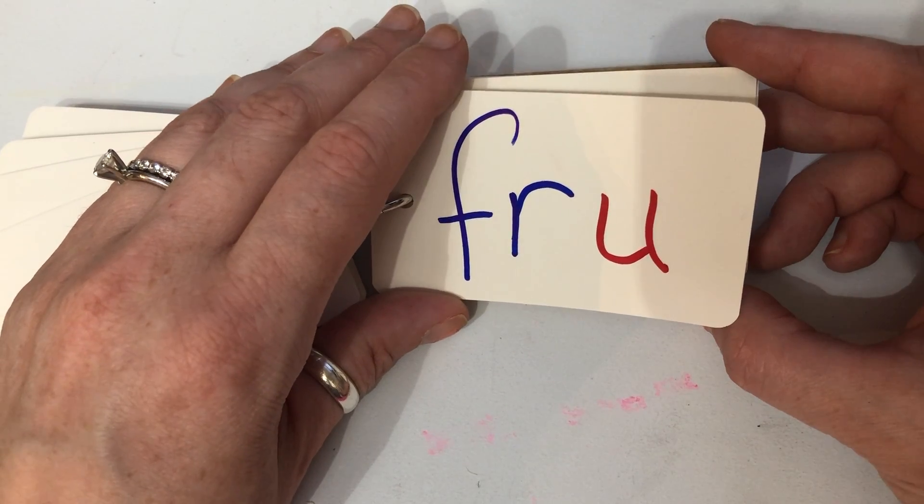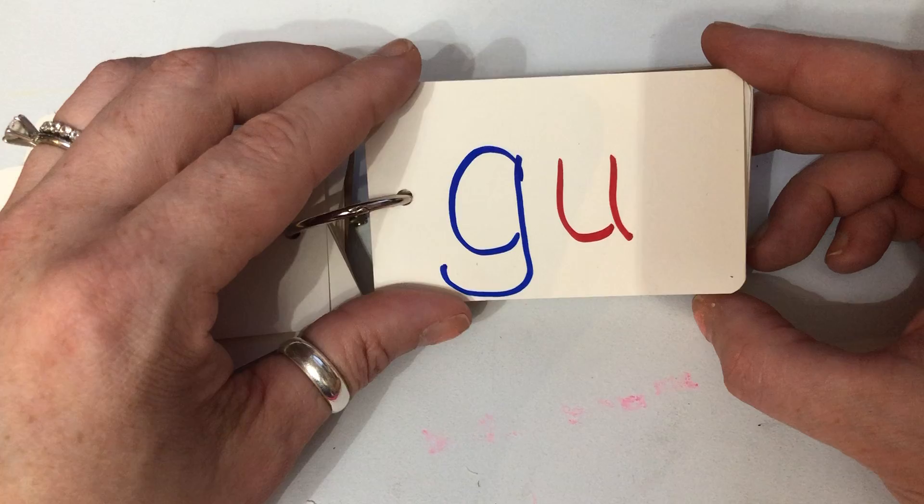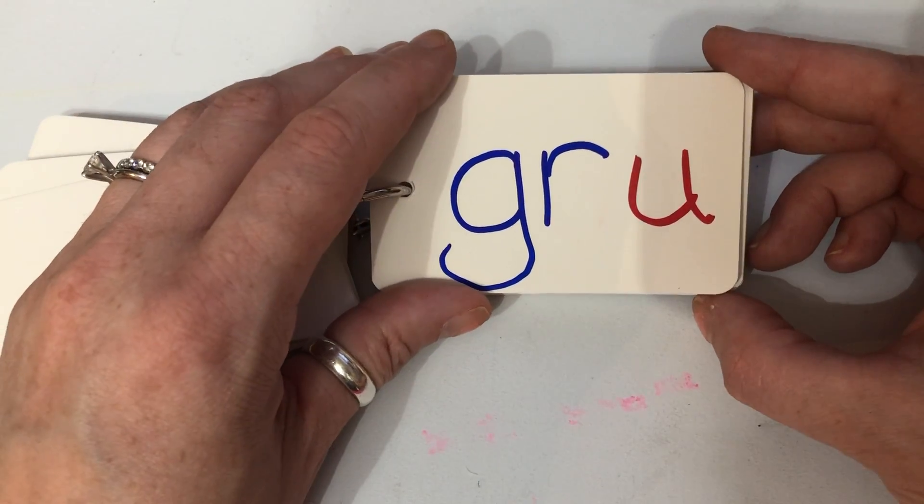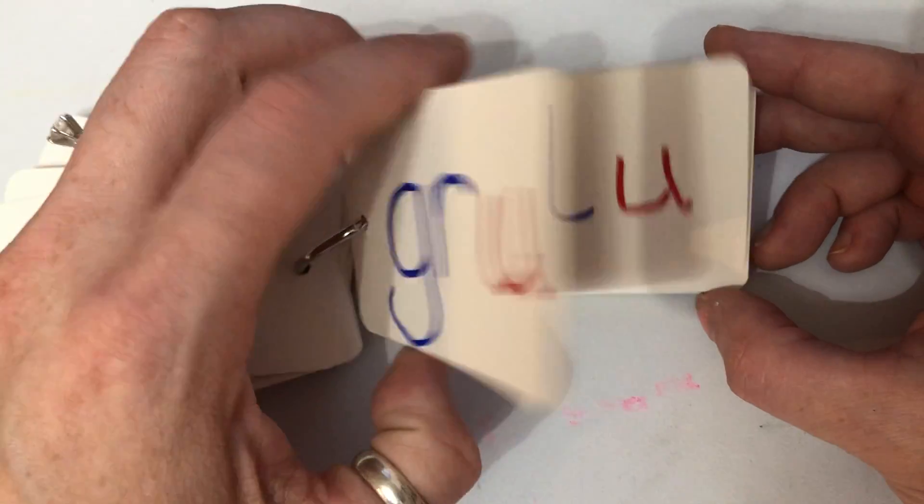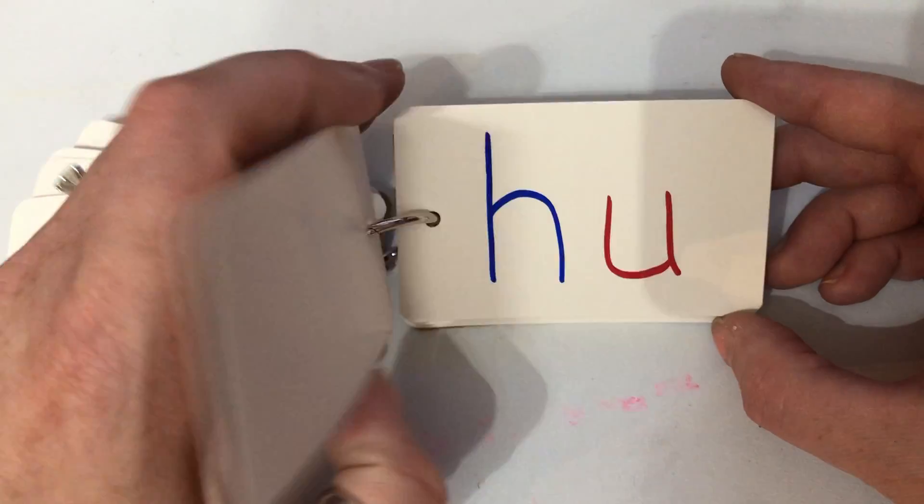Fruh as in frump. Fruh, fruh, frump. Guh as in gum. Guh, guh, gum. Gruh as in grump. Gruh, gruh, grump. Gluh as in glum. Gluh, gluh, glum.